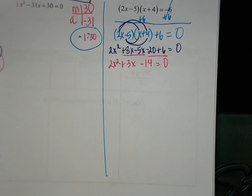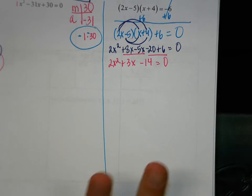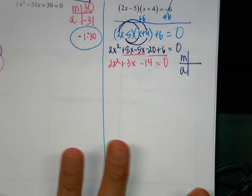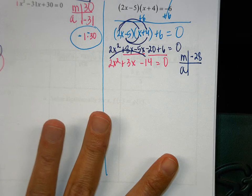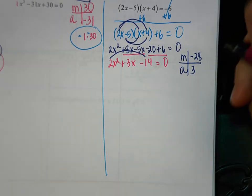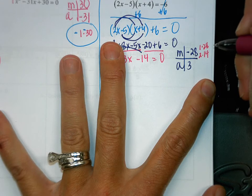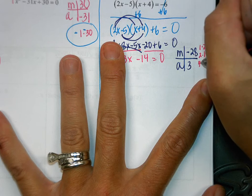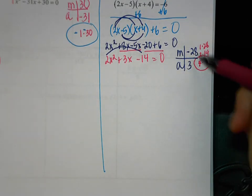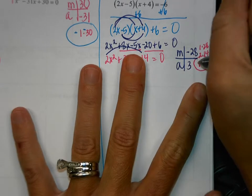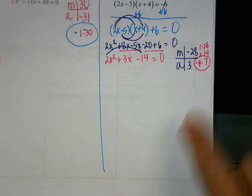I have 3 terms now. Is there a GCF for this problem? No. So we're going to find our multiplication number and our adding number. My multiplying number is negative 28, my adding number is 3. Listing numbers that multiply to be 28: 1 and 28, 2 and 14, 4 and 7 — that one might work. How will I make these multiply to give a negative but add to give positive 3? If the 4 is negative: negative 4 plus 7 gives positive 3, and negative 4 times 7 gives negative 28. So we rewrite: 2x squared, minus 4x plus 7x, minus 14 equals 0.